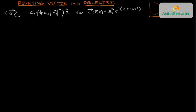In this tutorial, we're going to talk about the way that the Poynting vector changes when you're in a dielectric that has a complex refractive index.